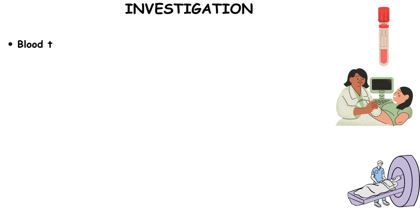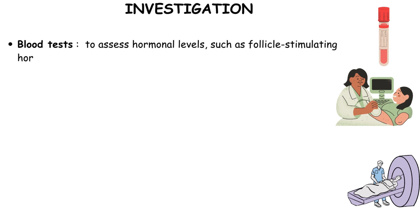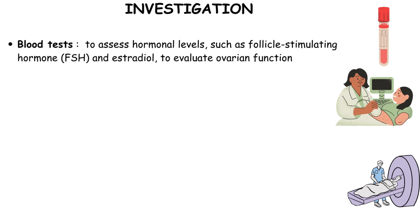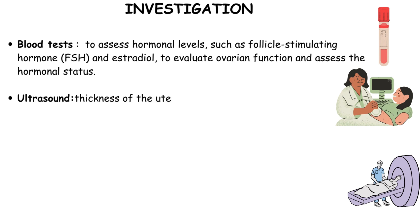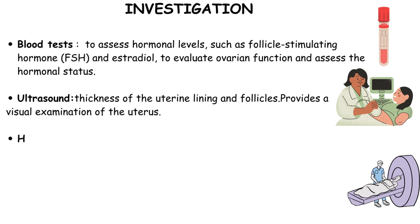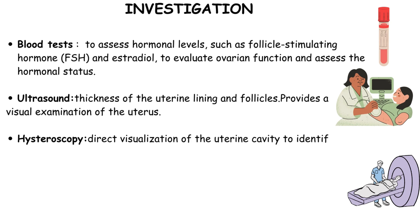Investigations include blood tests to evaluate hormonal levels such as follicle stimulating hormone (FSH) and estradiol, providing insights into ovarian function and hormonal status. Ultrasound is utilized to examine the thickness of the uterine lining and follicles. Hysteroscopy allows for direct visualization of the uterine cavity, aiding in the identification of scarring or adhesions.